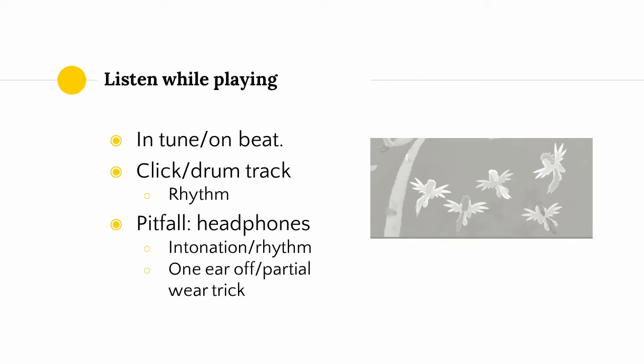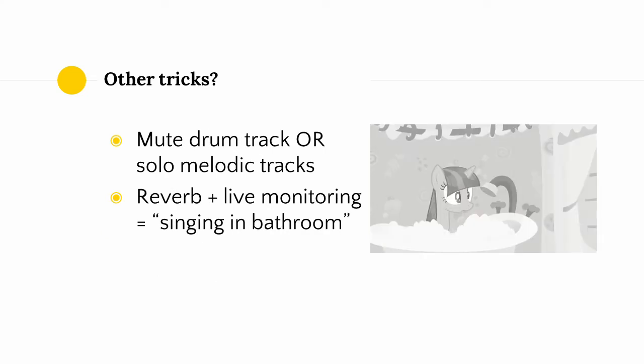Headphones can be helpful for preventing the neighbors from hearing your latest pony zone, but they also artificially color your hearing of everything outside your headphones, particularly if they're closed-back. Combining this with the fact that there is latency in your audio chain, wearing headphones while recording can be detrimental to your intonation and rhythm. So a common trick for recording with headphones is to leave one ear off so you can still hear yourself or your instrument — and that's why it's important to get a set of headphones with which it's easy to do this.